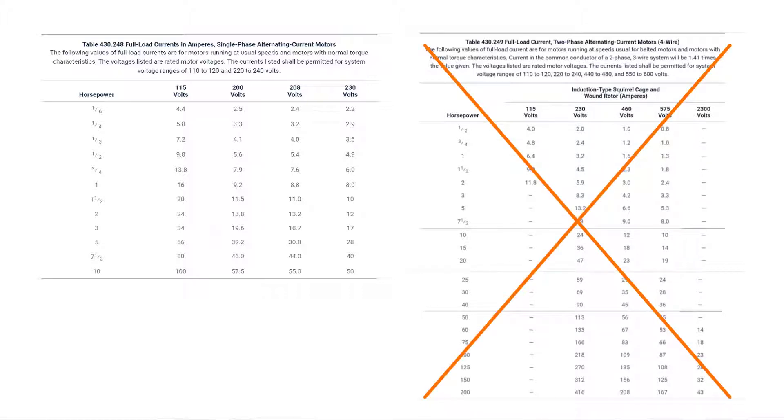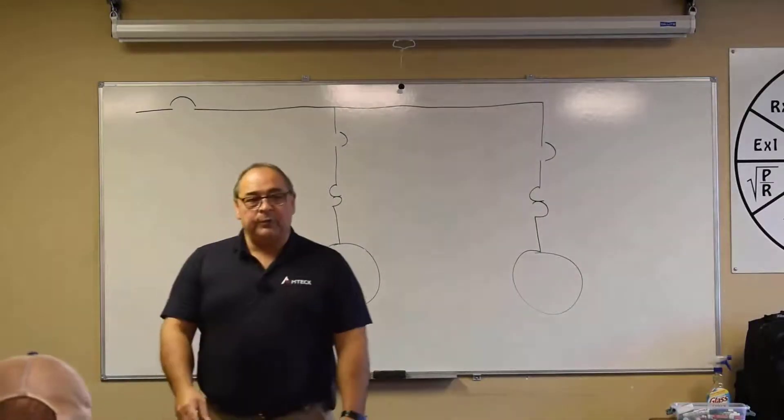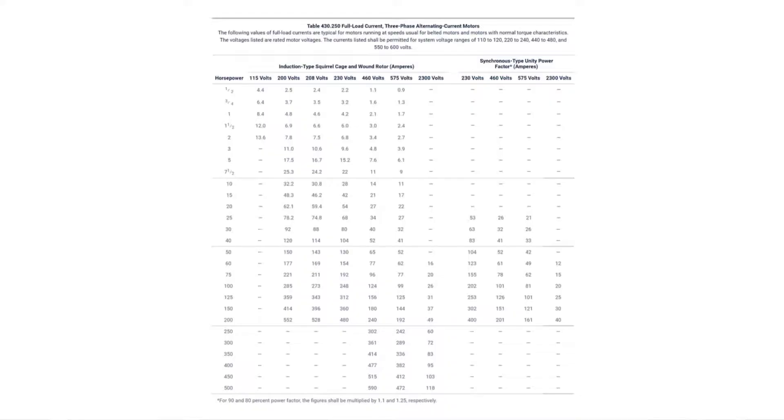While you've got your dark color highlighter, I want you to look at article and table 430.250, which is on the next page. In the table 430.250, we've got voltage ranges up there. We'll start out at 115 volts. I want you to X out that 115 volts, where it goes with 4.4, 6.4, 8.4, 12.0, 13.6. X it out.